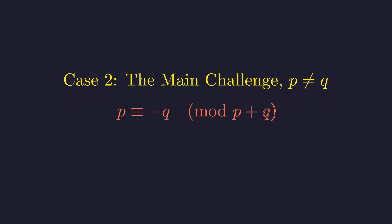And this right here is the master key. Modulo p plus q, p is congruent to negative q. This is because adding q to p gives p plus q, which is of course 0, modulo p plus q.